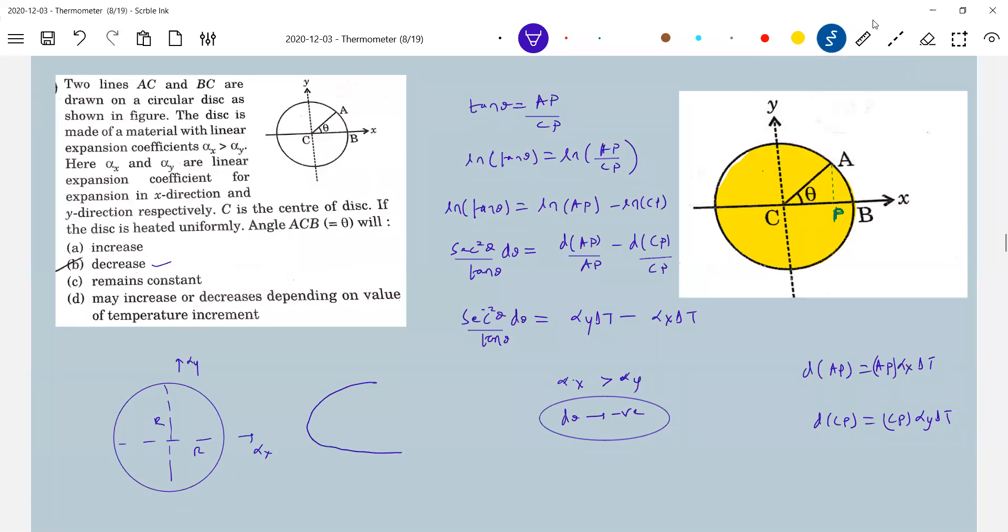Some sort of elliptical? Not exactly elliptical, but it should be oblong. Any reason for that? Because alpha x greater than alpha y. Agreed? This is what happens.